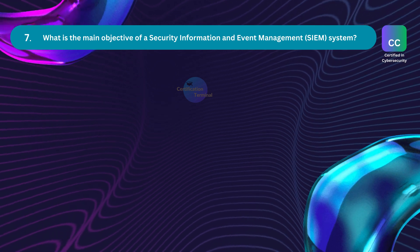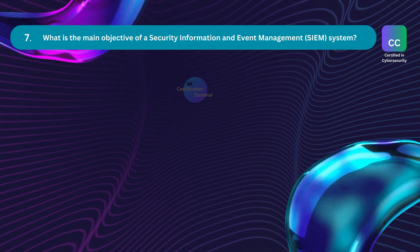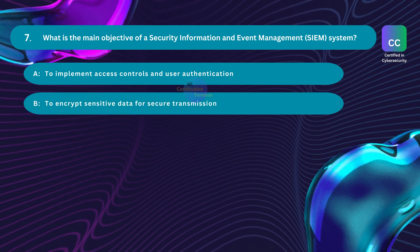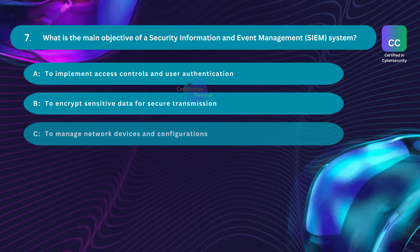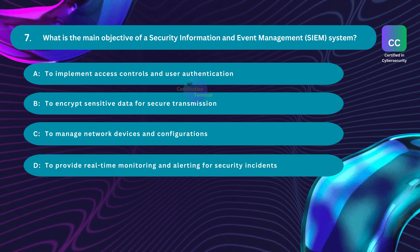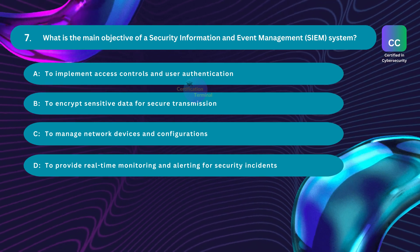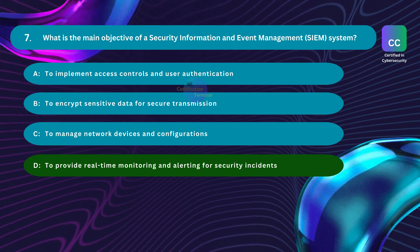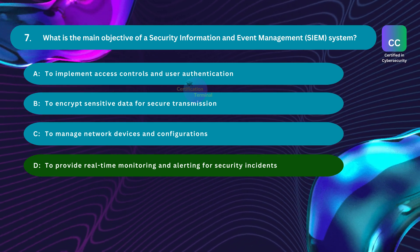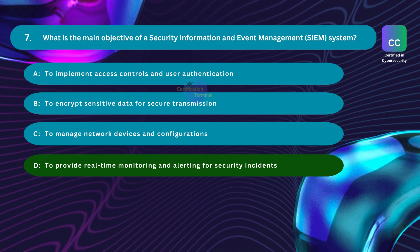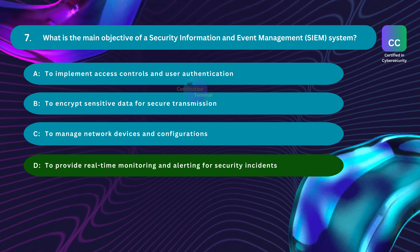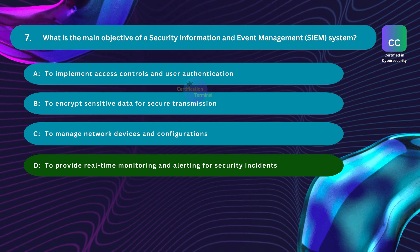Question number seven: What is the main objective of a security information and event management (SIEM) system? Option A: to implement access controls and user authentication. Option B: to encrypt sensitive data for secure transmission. Option C: to manage network devices and configurations. Option D: to provide real-time monitoring and alerting for security incidents. The primary objective of a SIEM system is to provide real-time monitoring of security events, analyze them for potential security incidents, and generate alerts.